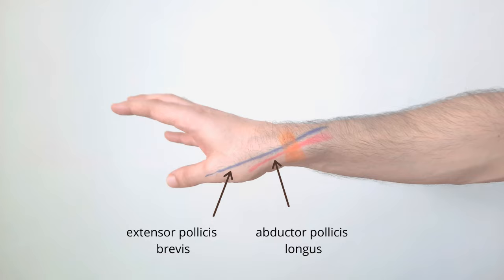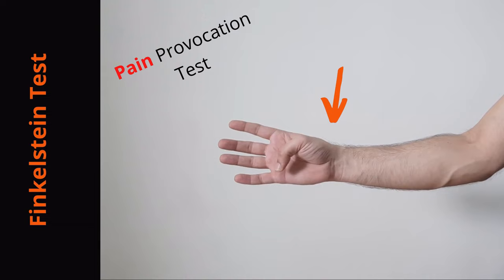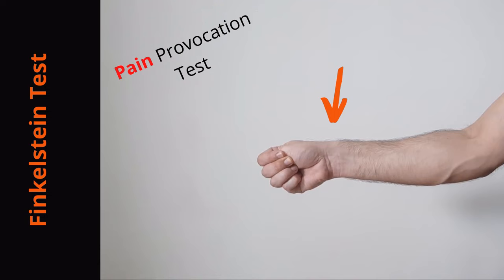Finkelstein test is a pain provocation test used by clinicians to diagnose this condition. It's done by grasping the thumb with all the fingers and bending the wrist towards the little finger. Sharp pain indicates the possibility of having De Quervain's tenosynovitis.